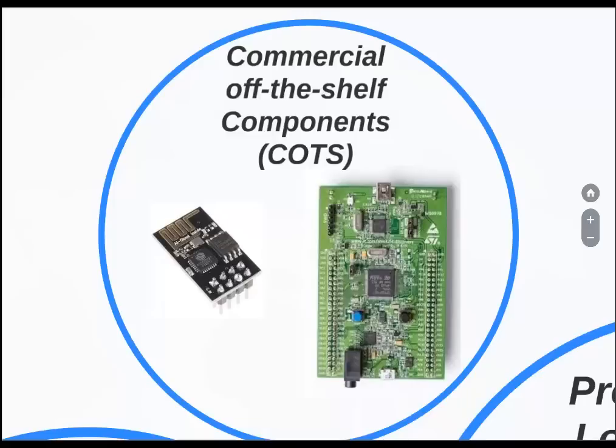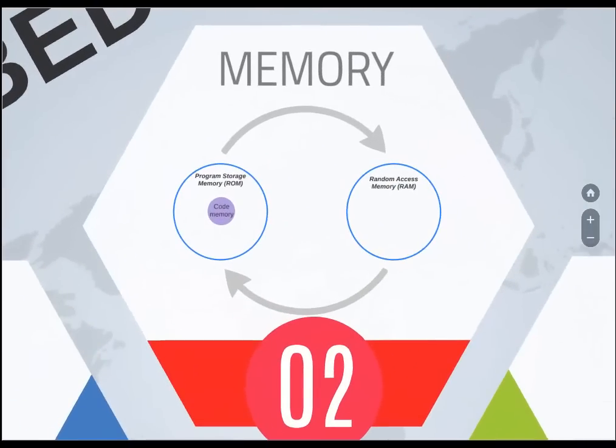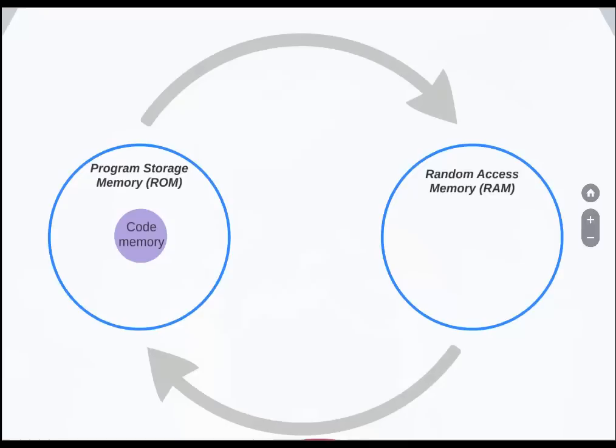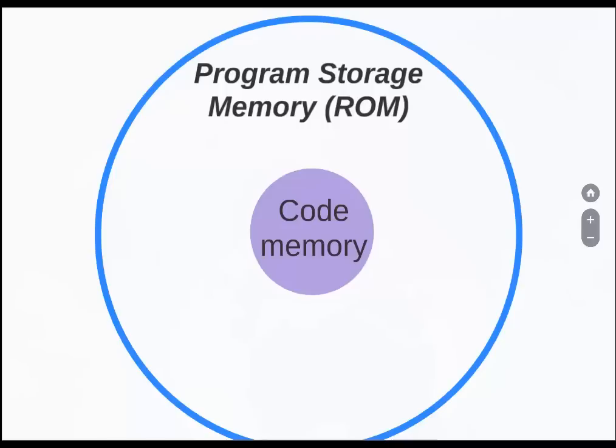After having talked about the core, let us move on to memory. Memory can be classified into two parts: program storage memory, also called ROM, and random access memory or RAM. The code memory can be stored in several different places. One option is masked ROM, which is hardwired technology for storing data. It is factory programmed with low cost and high volume production. The second option is programmable read-only memory or PROM, which is not pre-programmed by the manufacturer. You can program it once with your code, but once programmed, it cannot be reprogrammed again.